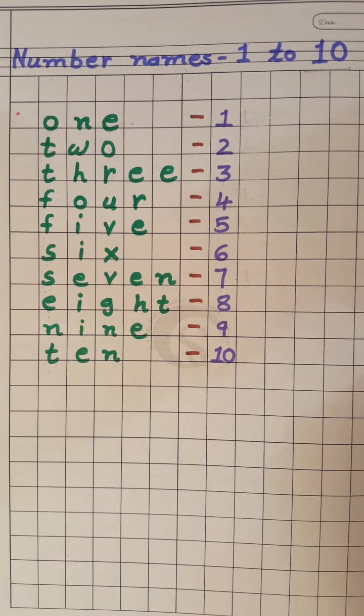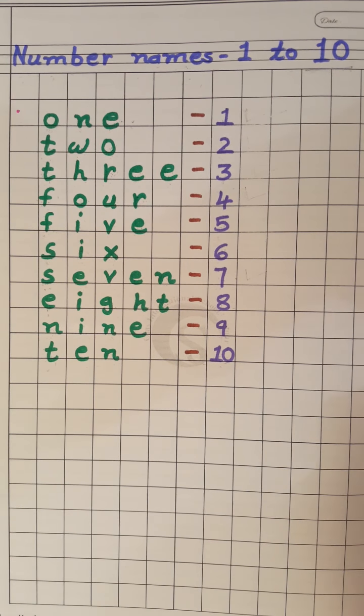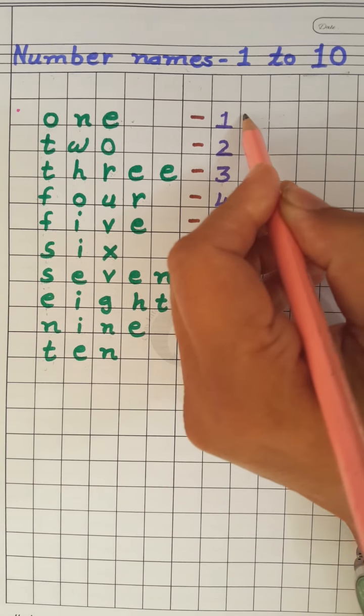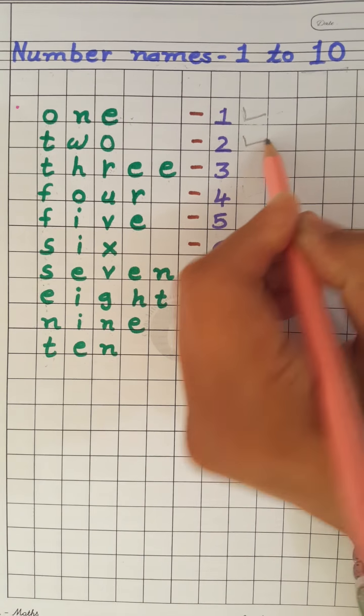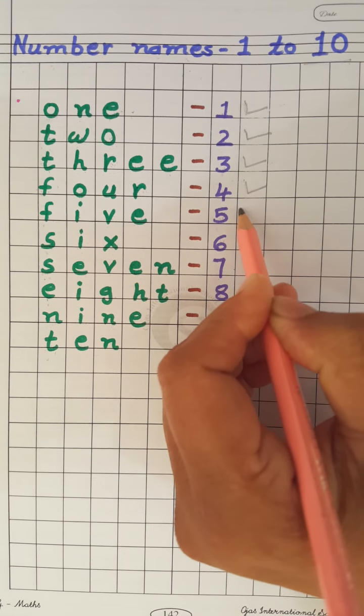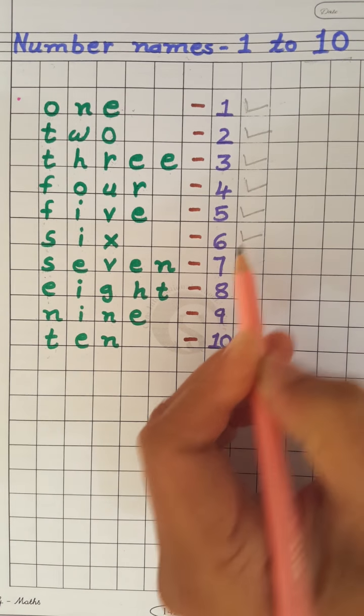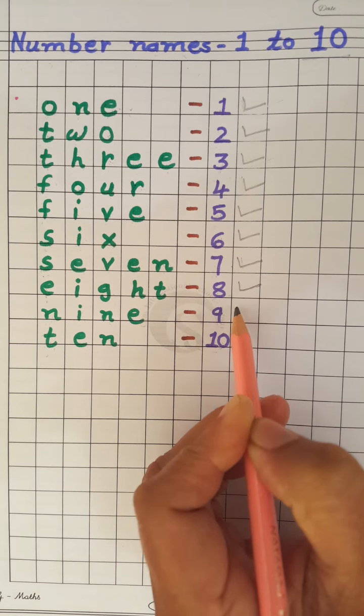And in number names, how many number names we have to compare to children? Number name of 1, number name of 2, number name of 3, number name of 4, number name of 5, 6, 7, 8 and 9.